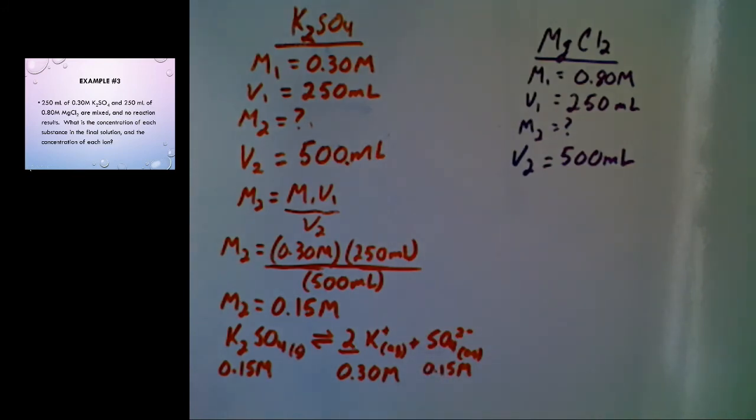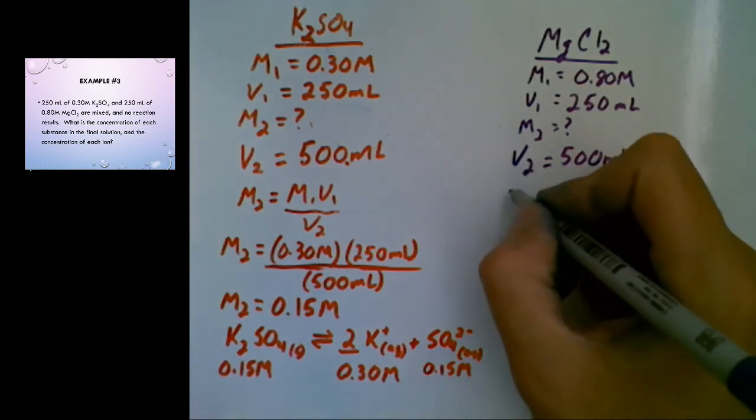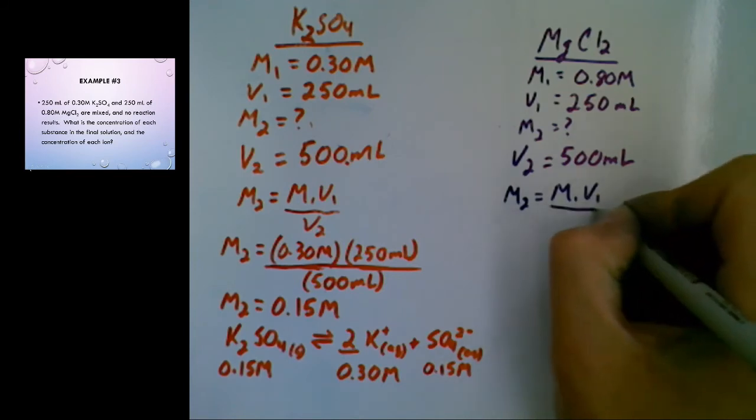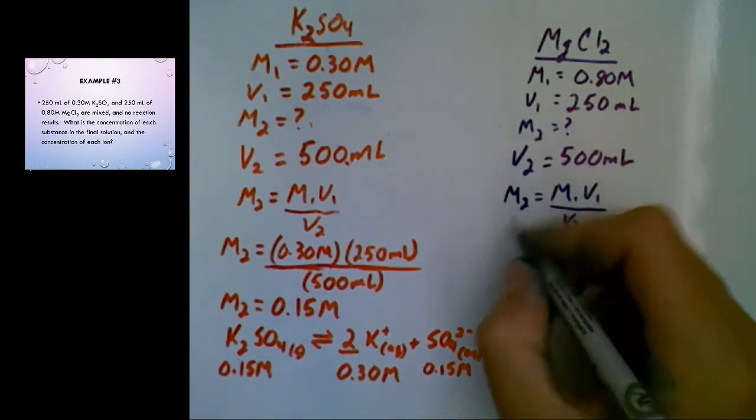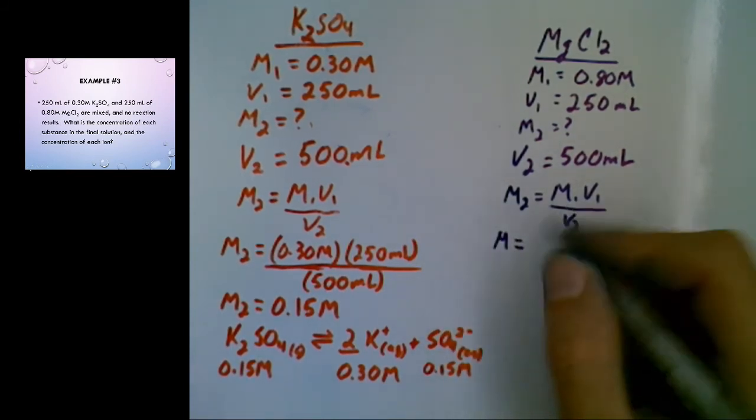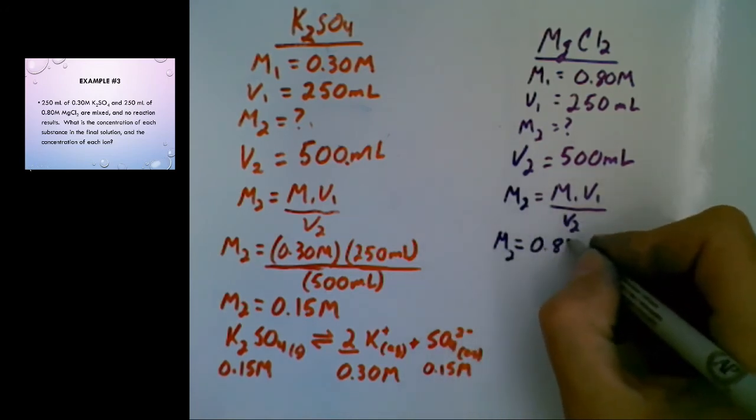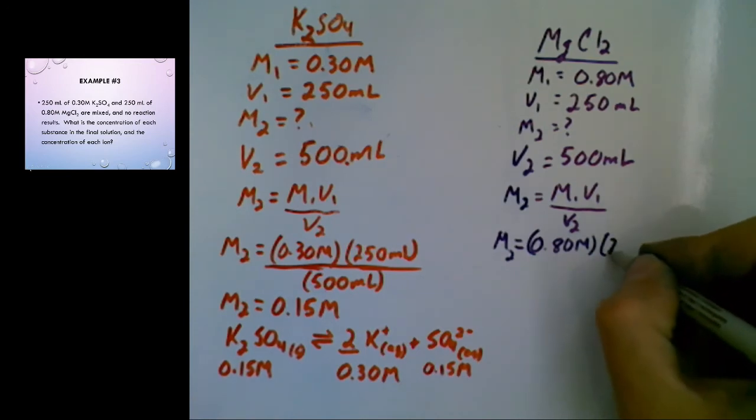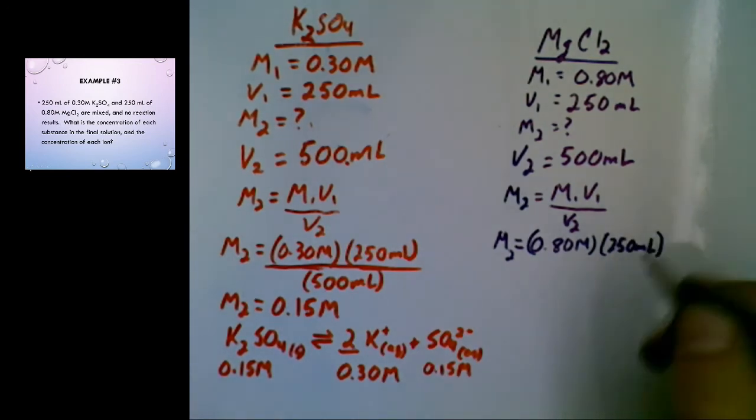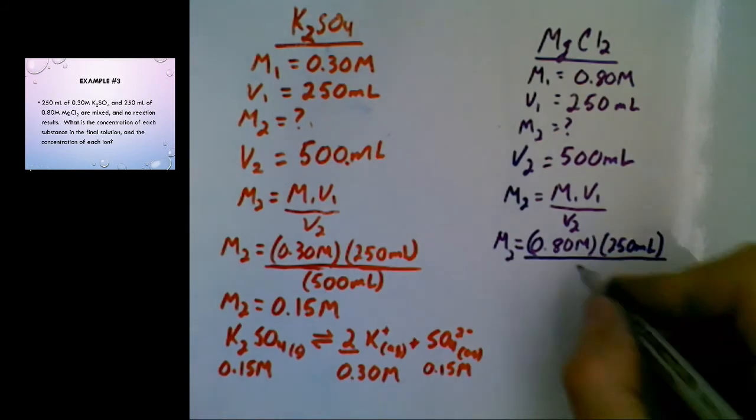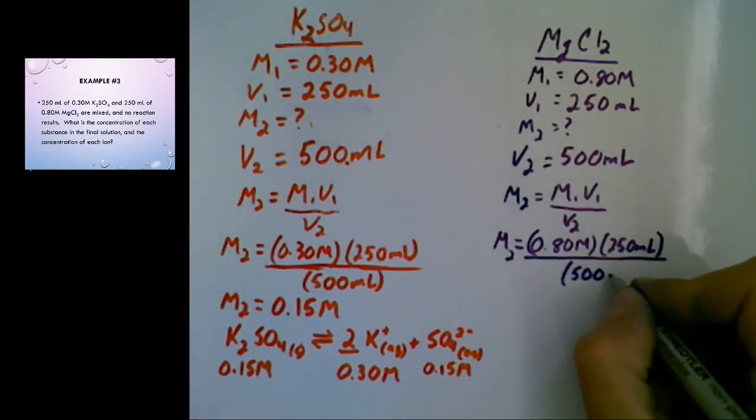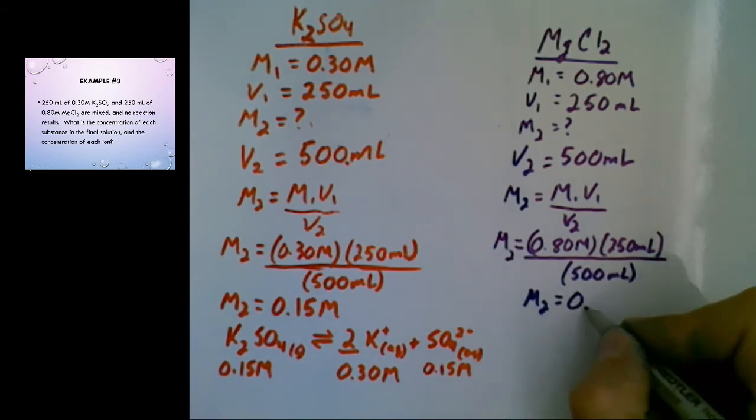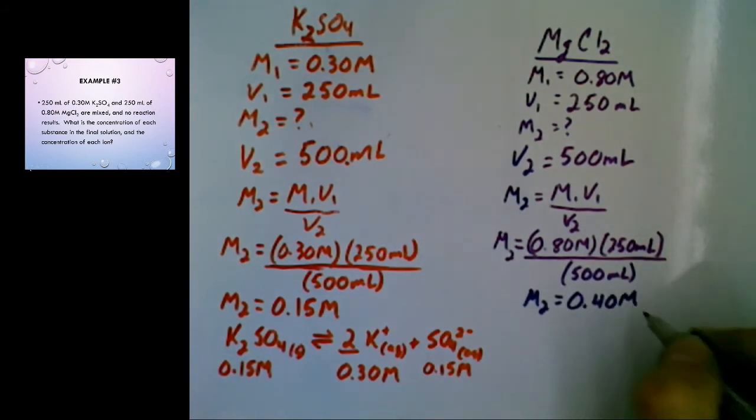So we've done that for one substance. Let's do it for the other. We're going to calculate the final concentration after mixing using the dilution equation. We're going to plug in our values. So M1 is 0.80 molarity. Initial volume, 250. Final volume, 500. That gives you a final concentration of 0.40 molarity.